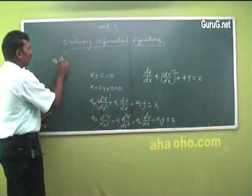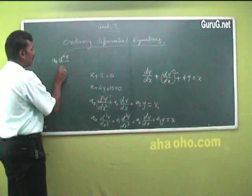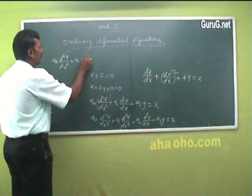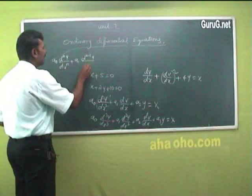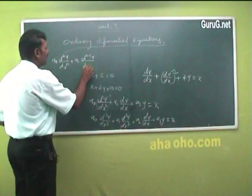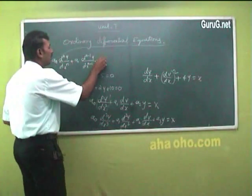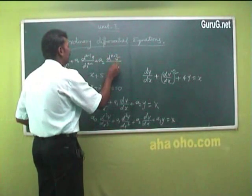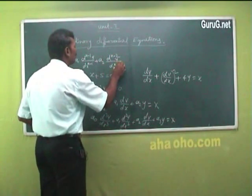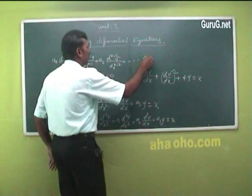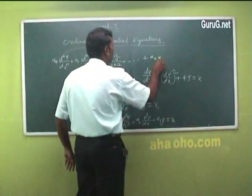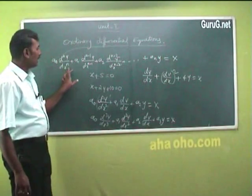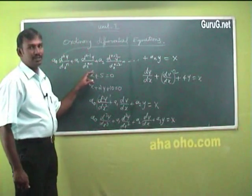The general nth order differential equation is: a₀ dⁿy/dxⁿ plus a₁ dⁿ⁻¹y/dxⁿ⁻¹ plus a₂ dⁿ⁻²y/dxⁿ⁻² plus ... plus a₁y equals some function of x. This is the nth order differential equation.